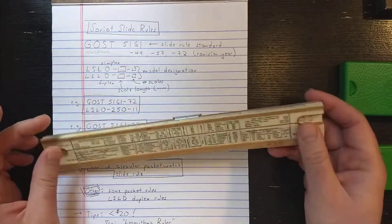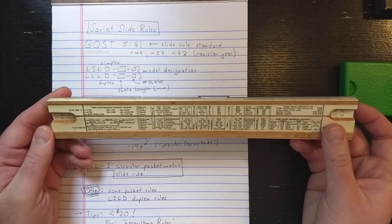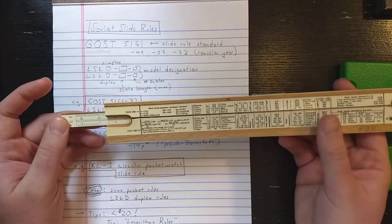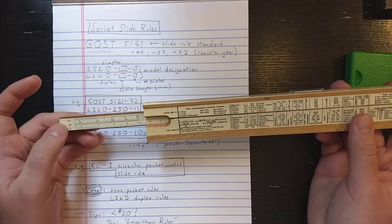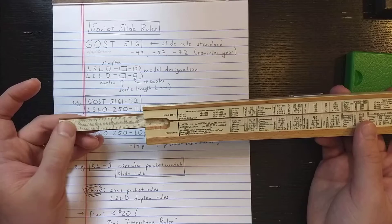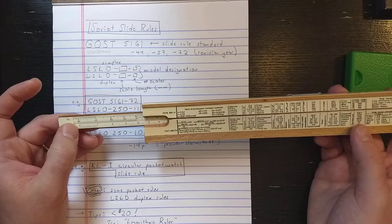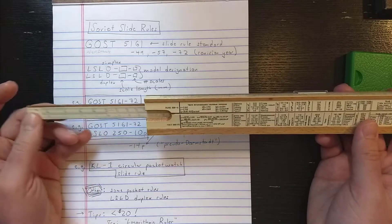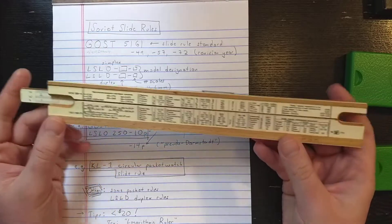On the rear here you see some tables, and there are the standard Rietz trigonometric scales: S, T, and T. Sometimes you'll see these with decimal degree divisions, and sometimes with degrees, minutes, seconds.